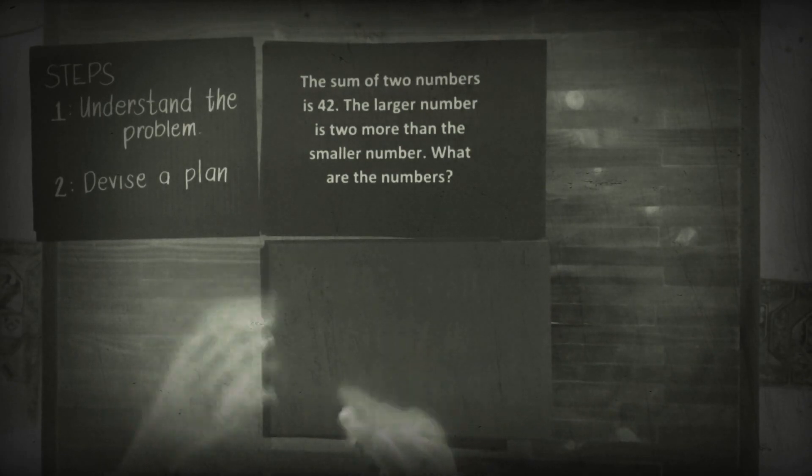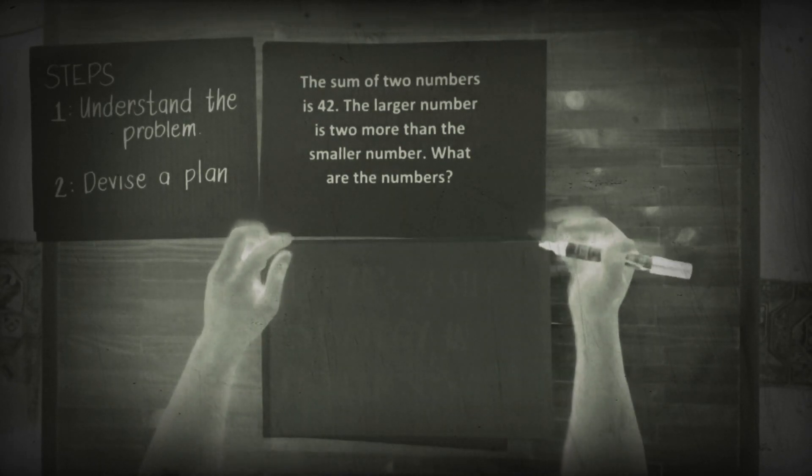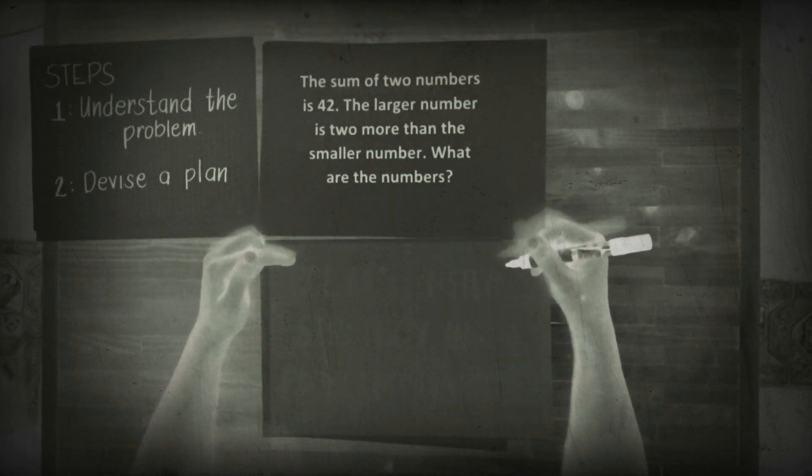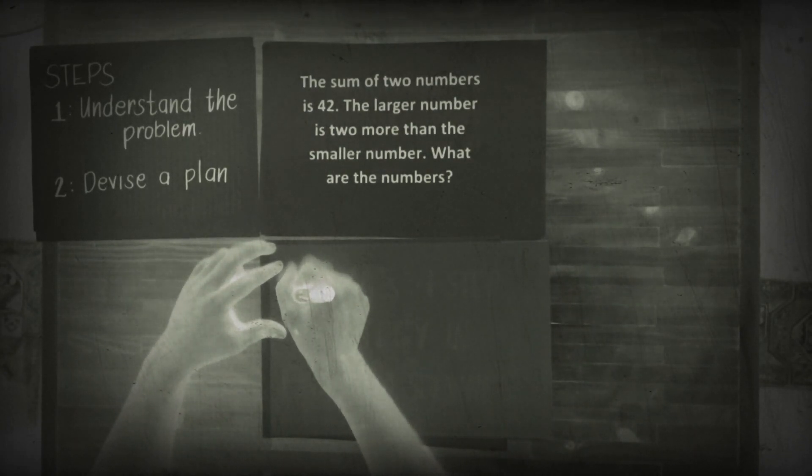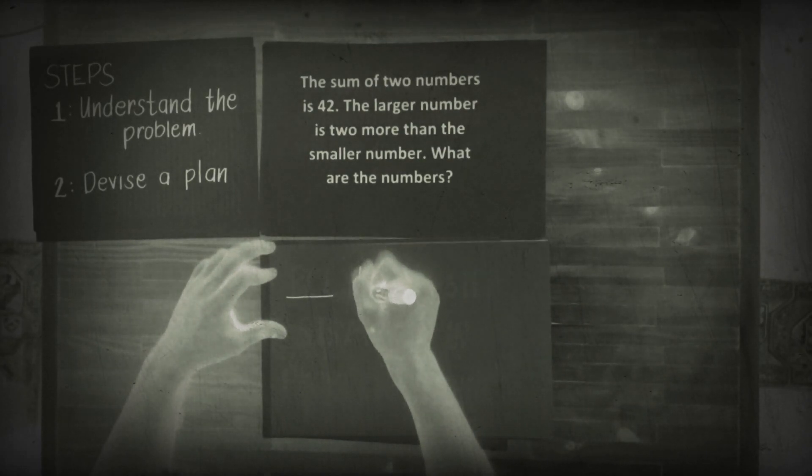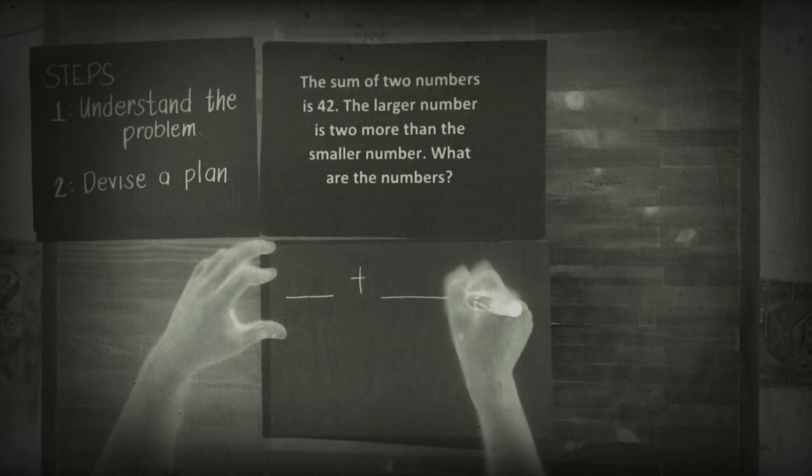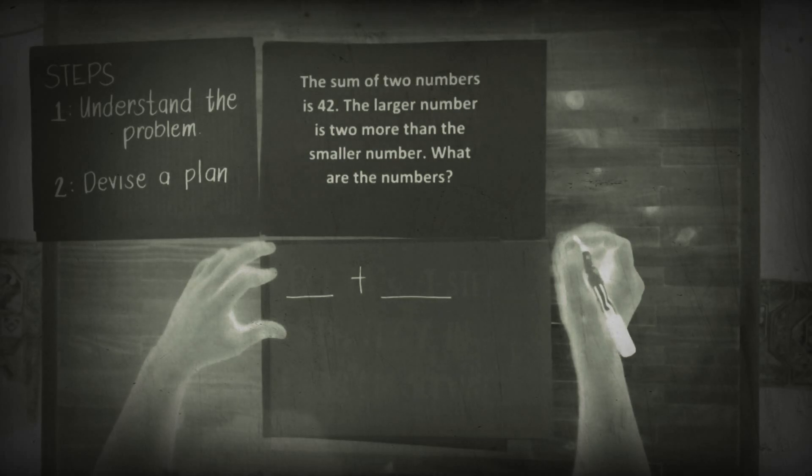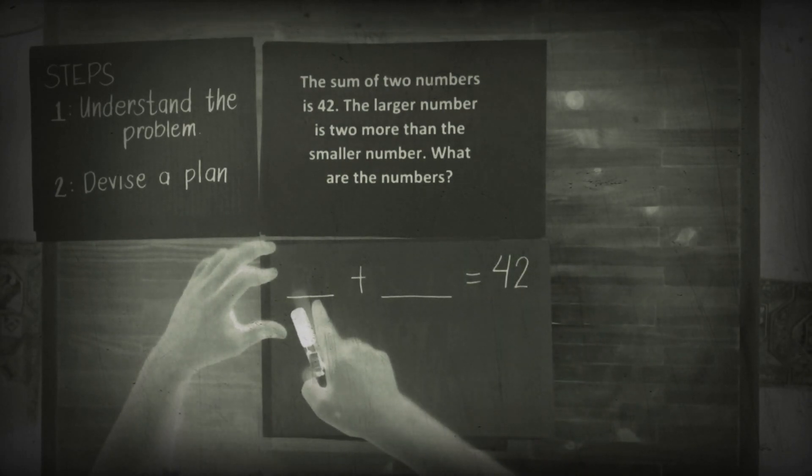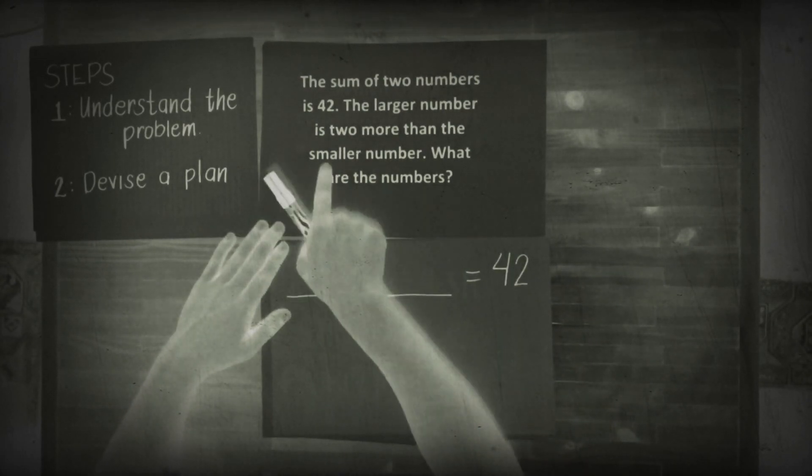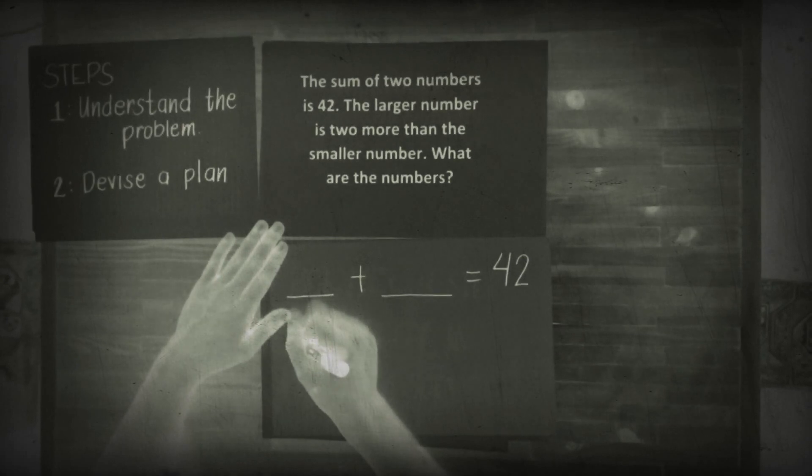Step number 2, devise a plan. In devising a plan you have to represent the given. We have two numbers that when added equals 42. You need to represent the numbers. Let x be the smaller number.